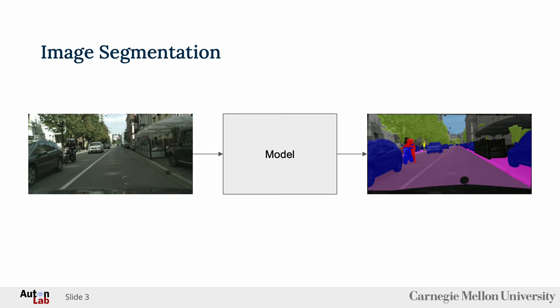In the task of image segmentation, an input image is passed to a model and the output is a segmented image where every pixel is assigned to a class. For example, when given an image from a car dashcam, the model should output a segmented image where pixels are classified as belonging to roads, humans, cars, etc.